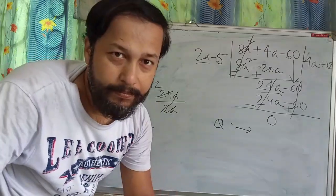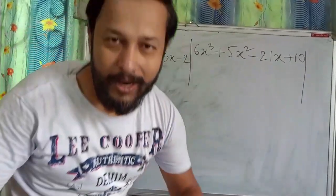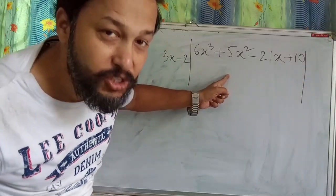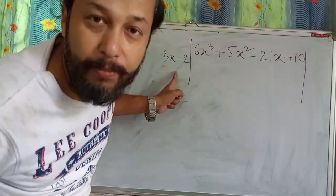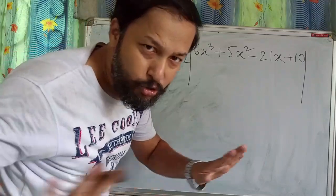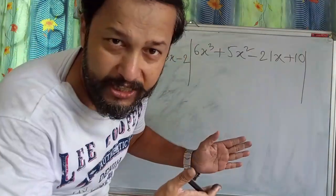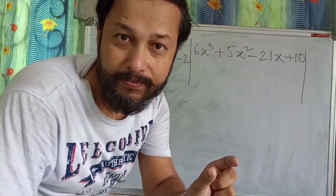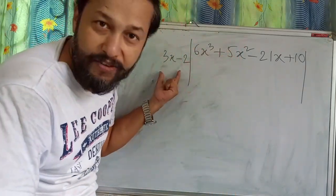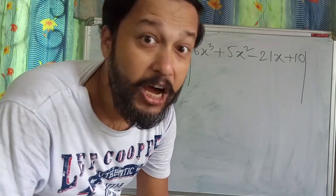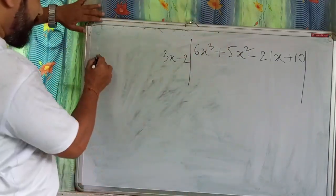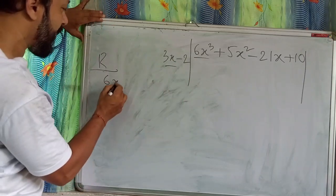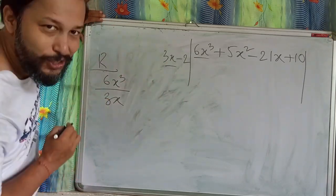Next sum: this whole expression is divided by 3x minus 2. The same process will be applied — don't worry. We write first term by first term in the rough section. That is 6x³ divided by 3x.